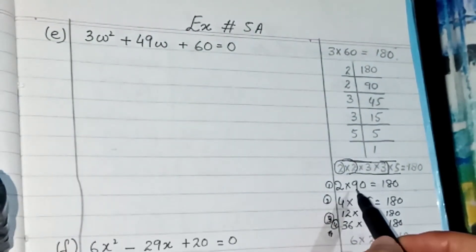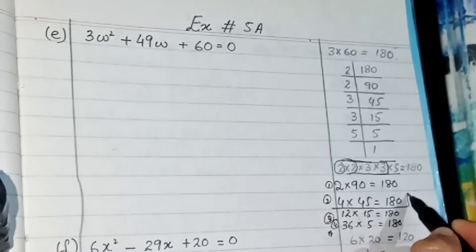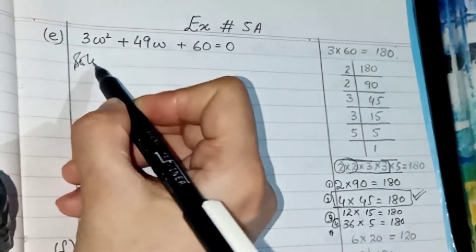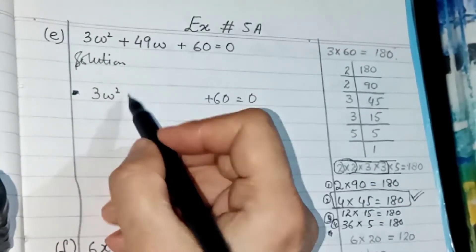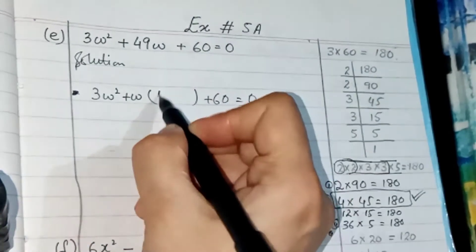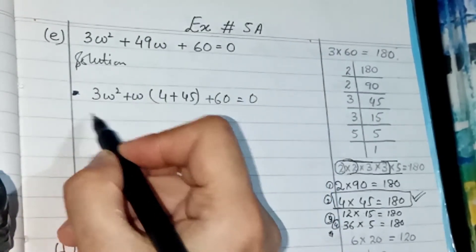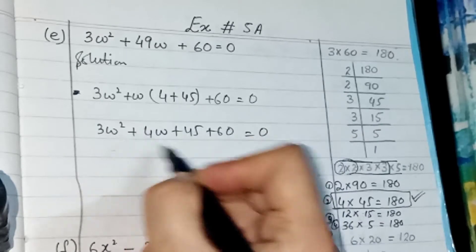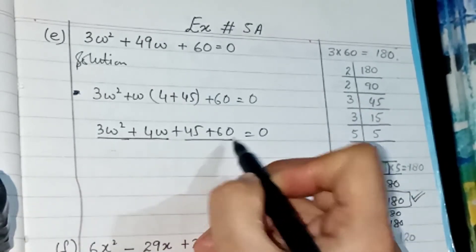90 plus 2 gives 92, so that's not it. 45 plus 4 gives 49, so we are going to take this pair of factors. Now I am going to split the middle term — write the first term and the last term the same as given in the question, take the plus sign and the variable outside the bracket, and inside add 4 plus 45. Multiplying gives 3w² plus 4w plus 45w plus 60, which adds up to 49w.